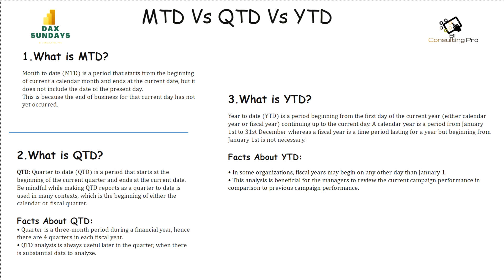The first concept we are going to discuss is MTD. Month to date is a period that starts from the beginning of a current calendar month and ends at the current date, but it does not include the date of the present day. This is because the end of business for that current day has not yet occurred. For example, if the present day is the 19th of September, then your MTD will cover data from 1st September to 18th September only.